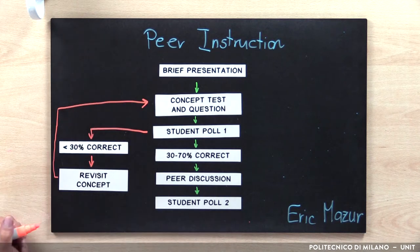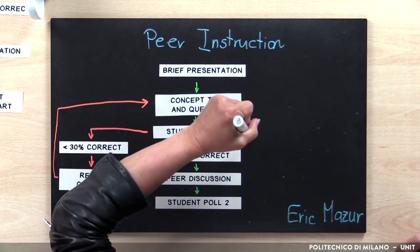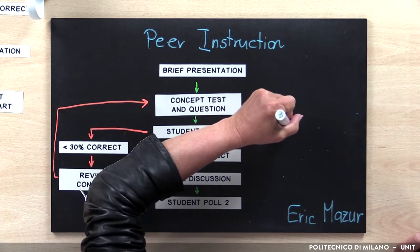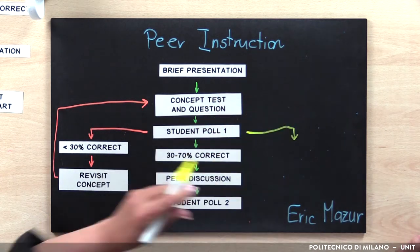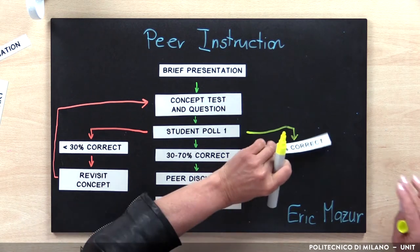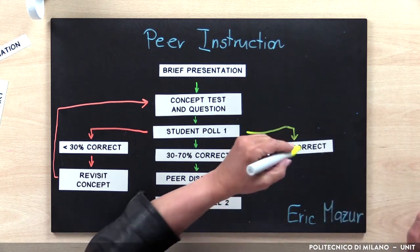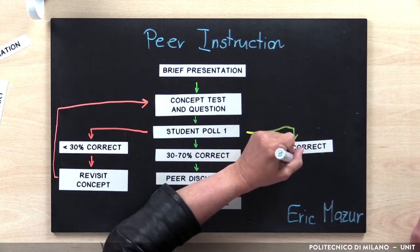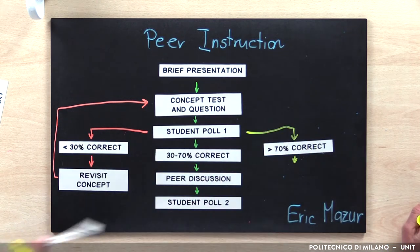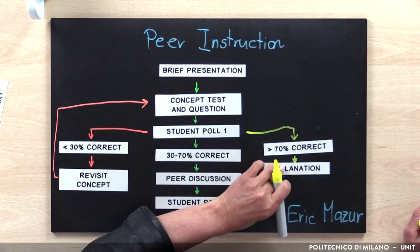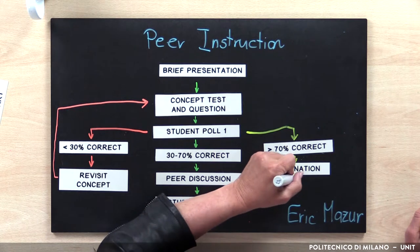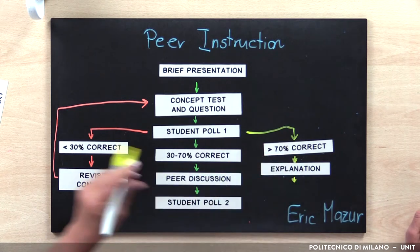On the other hand, if, after the first vote, there is more than 70% of good answers, the instructor may skip the second vote and ask a student to explain the correct answer.